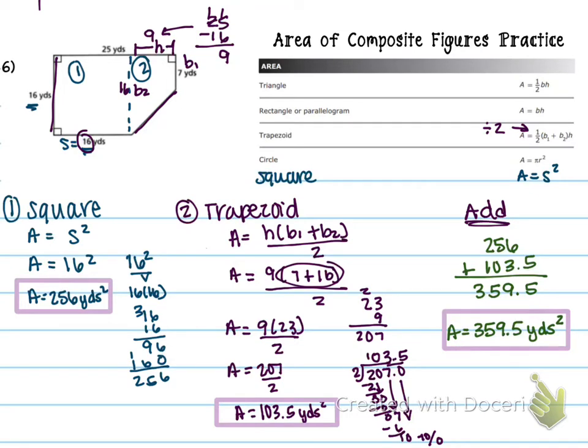Okay, so you should have gotten 359.5 yards squared. If you did not get that, press pause, and check my work against yours, and find your mistake. Moving on.